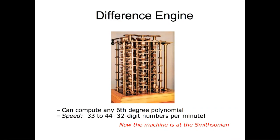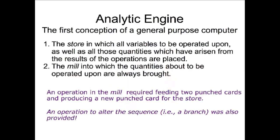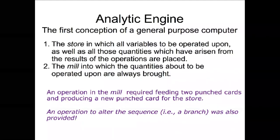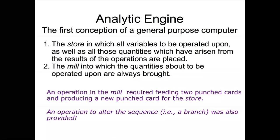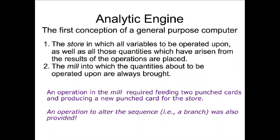It had instructions you could effectively give it, and it's slow — 33 to 44, 32-digit numbers per minute. Babbage was totally brilliant but not at all business savvy. He had tons of money from the British government to develop — basically they just wanted to compute tables very quickly. But Babbage was like, nah, I just want to make a general purpose computer instead.